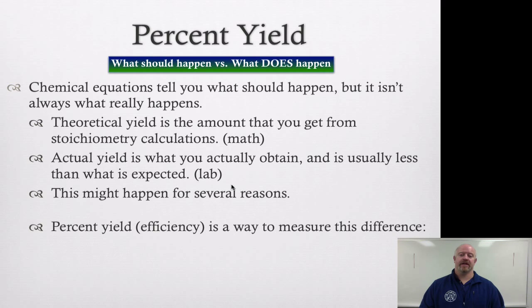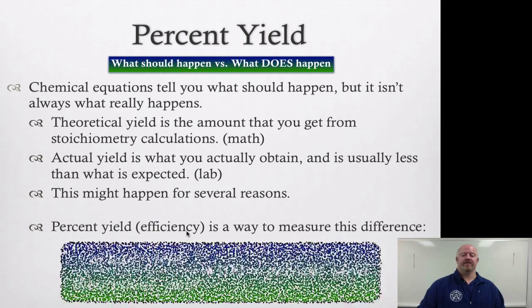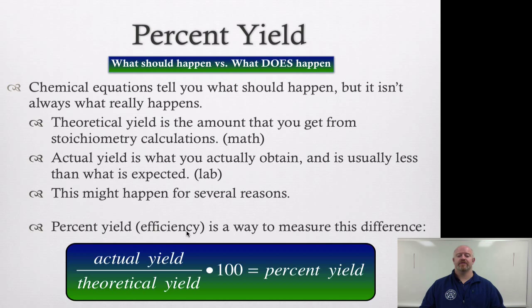Now the way we calculate that is by percent yield or efficiency. Again, this is nothing new to us in terms of the math. We just take what we actually got divided by what we thought we should have got in theory, take it times 100 to get a percent yield. It's very much like a percent composition type of process, but instead of calculating partial divided by whole, here we're talking about how much did we make versus how much we should have made.